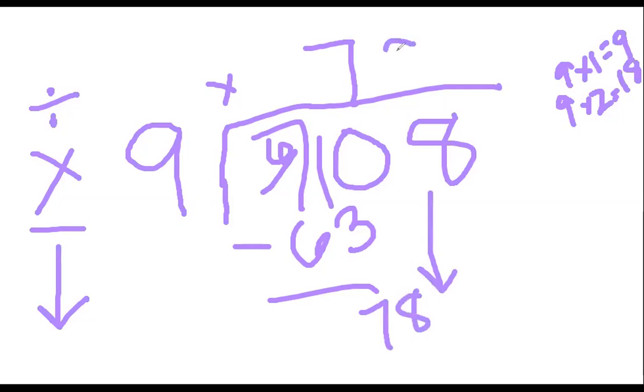And I'm going to bring it on down, so I have 78. Nine goes into 78 eight times. How many times? Put it on top. Multiply the sides. Nine times eight is 72.